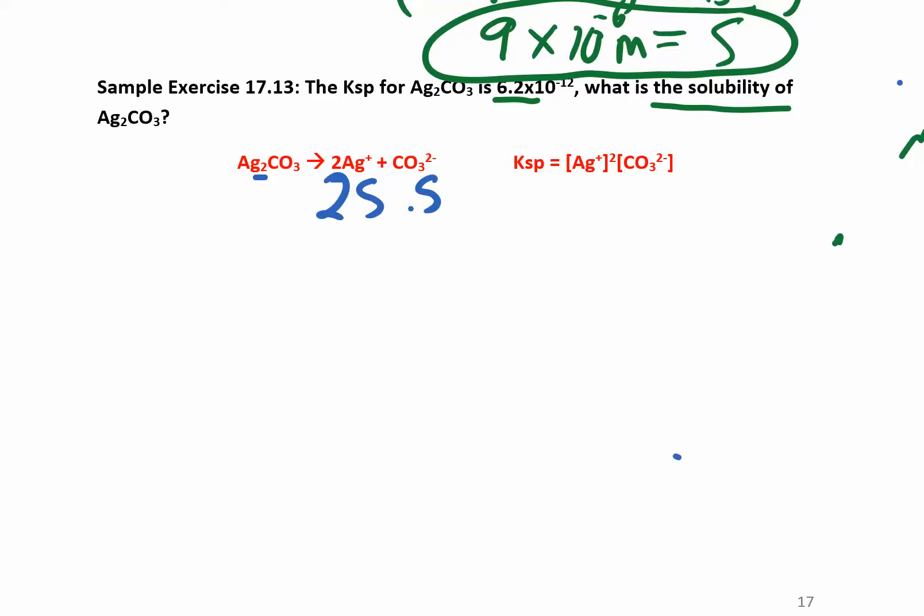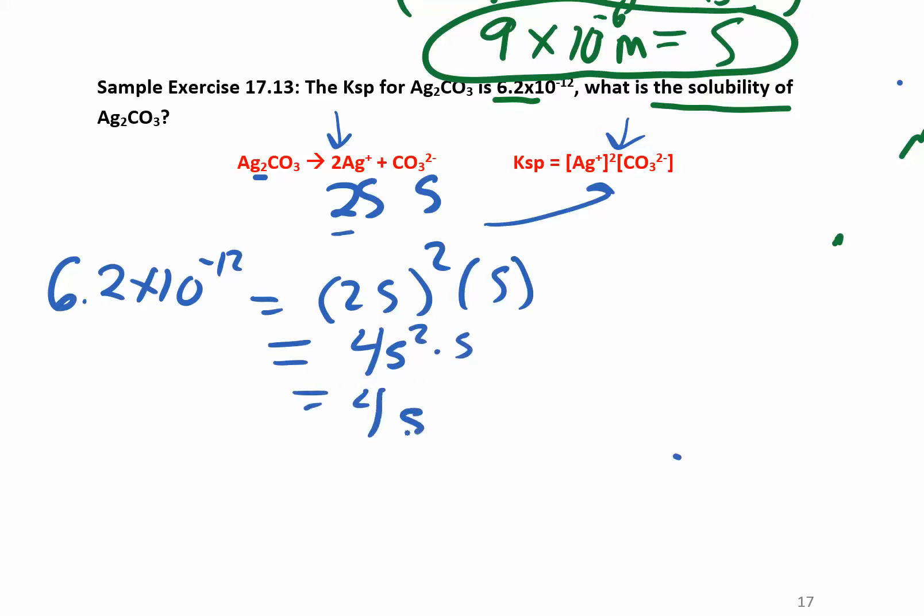Now I'm going to take that s and 2s and plug it into my KSP expression. So KSP was 6.2 times 10 to the negative 12 equals silver, which is 2s, that whole thing squared. If you feel like you're using this coefficient twice, you are. You're using it right here and then you're also squaring it. So you multiply it by 2 and you also square it. So that whole thing squared times another s, 2s times 2s, that whole thing squared is 4s² times s gives us 4s³.